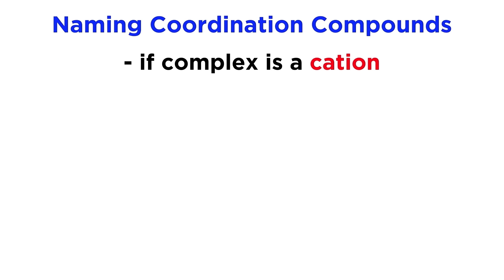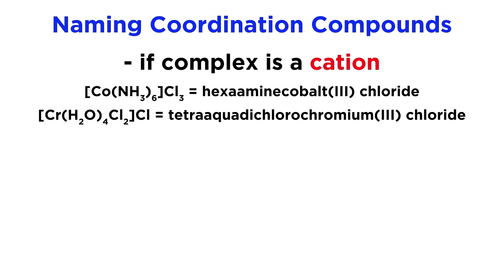Now to put things together, when the complex as a whole is a cation, we will list the metal by the name of its element, followed by a Roman numeral in parentheses to indicate its oxidation state. So as we can see in these examples, the ligands are listed first, with prefixes as necessary to indicate the number of them, then the metal ion with its oxidation state, and then any counterions to the complex, if applicable.